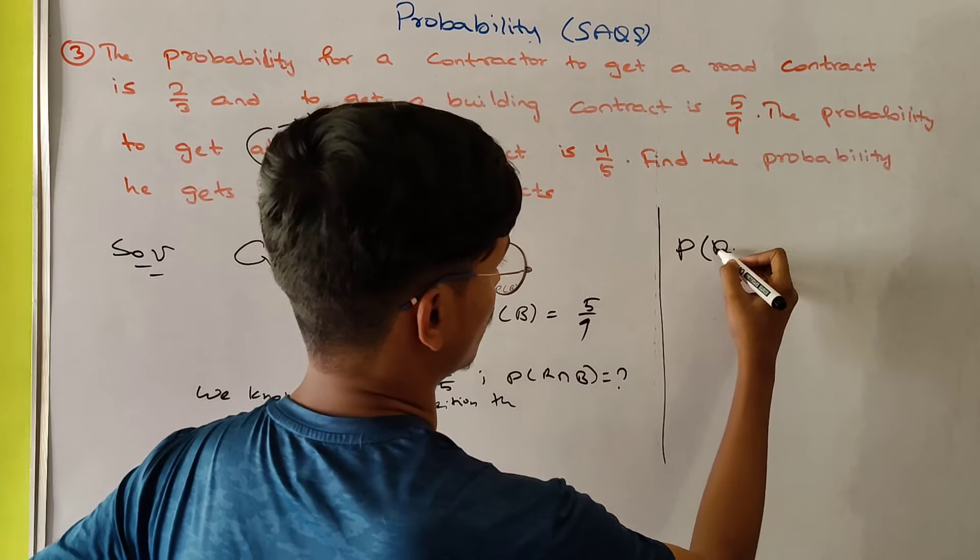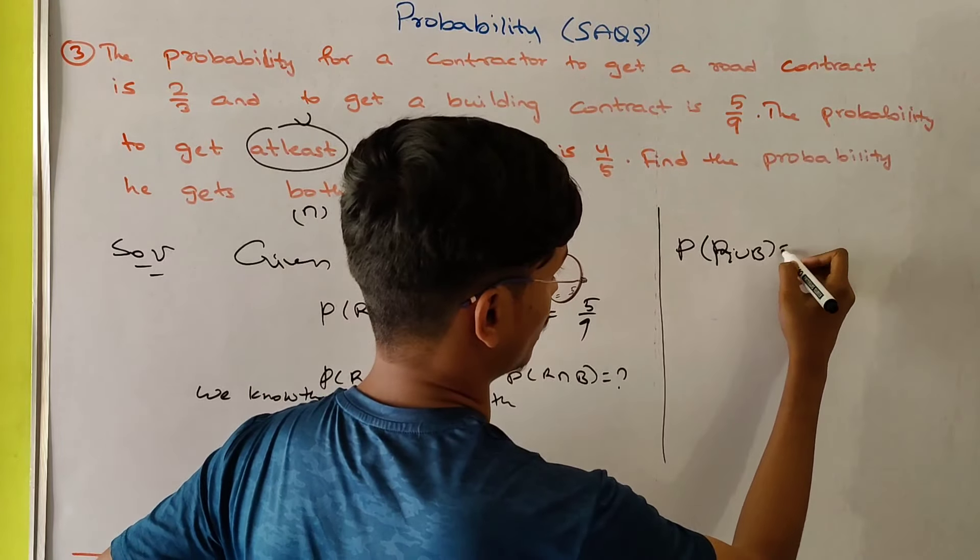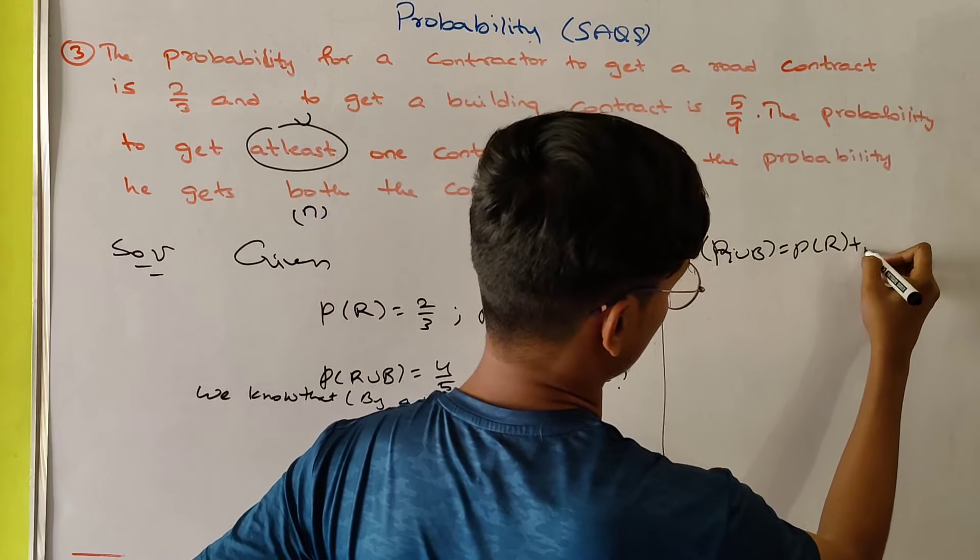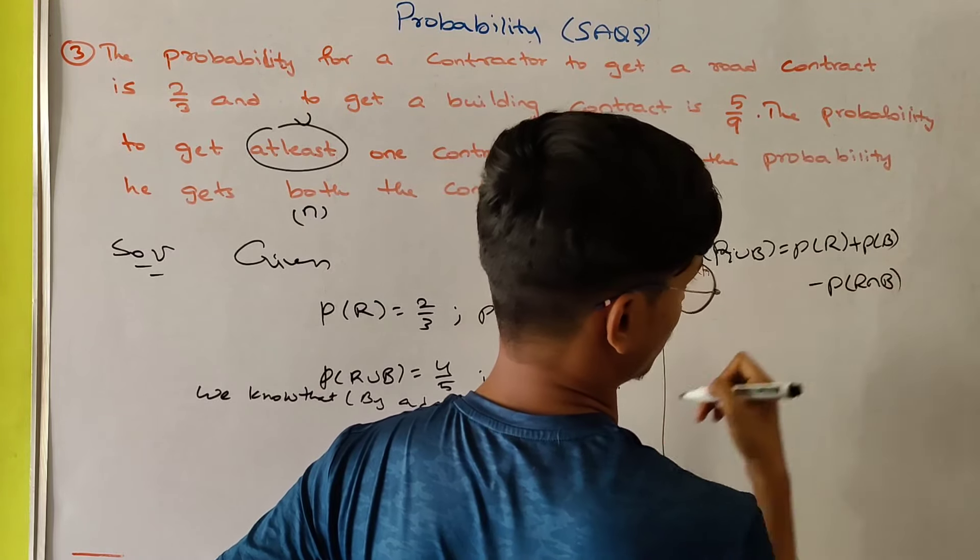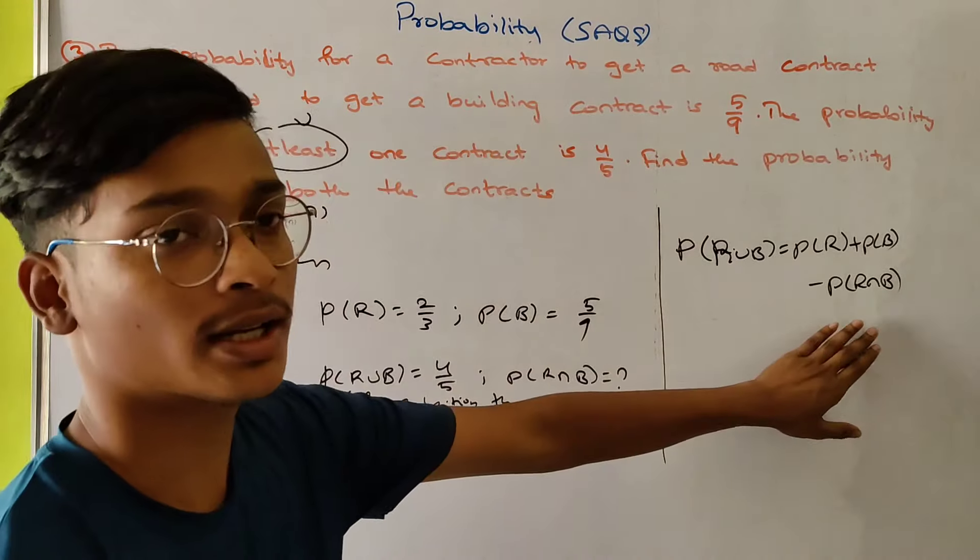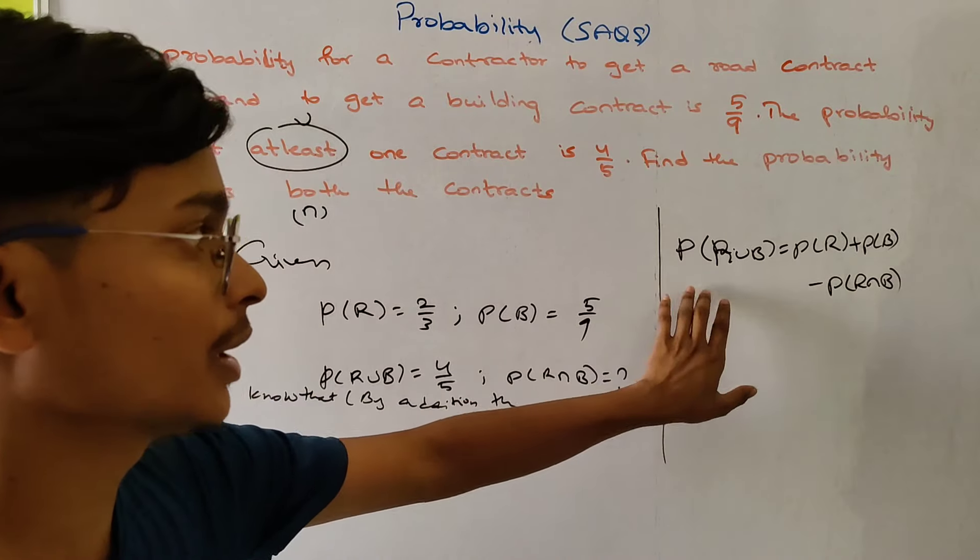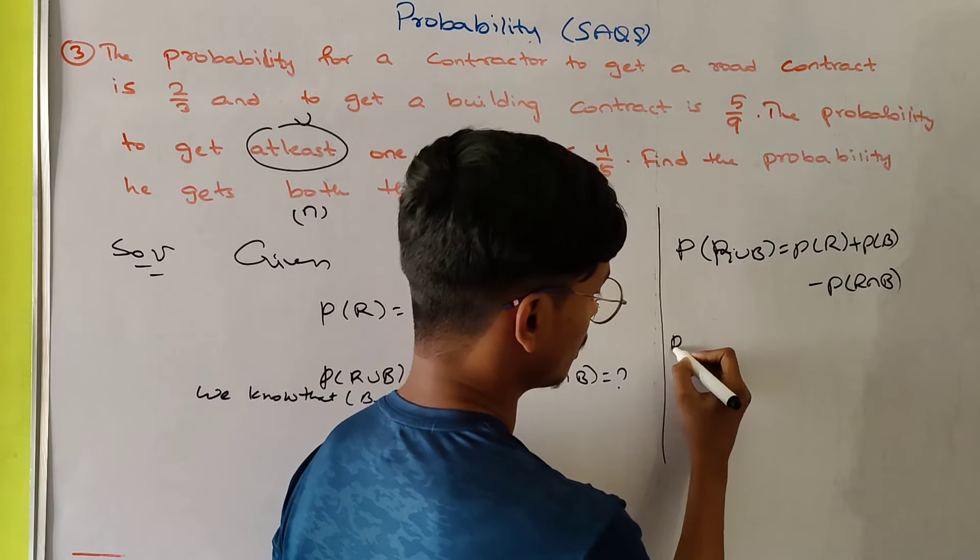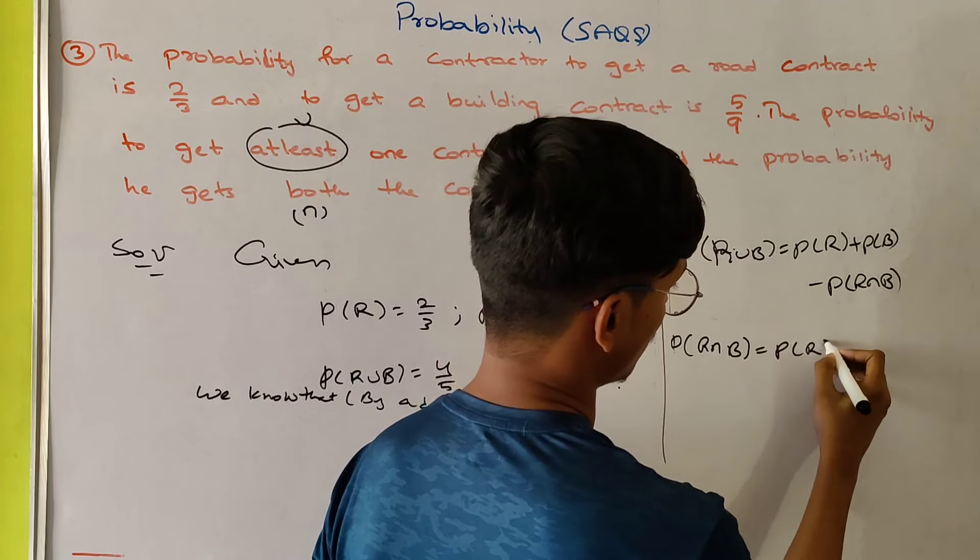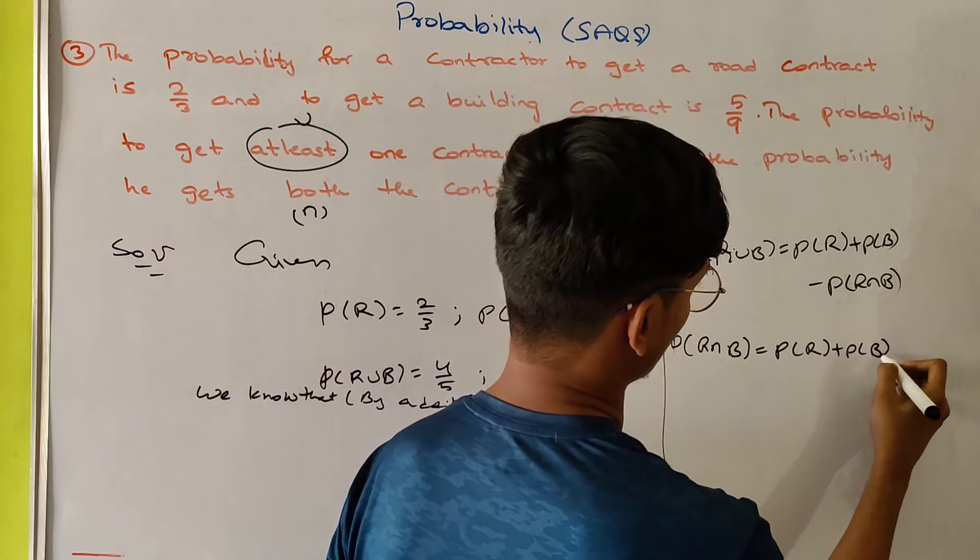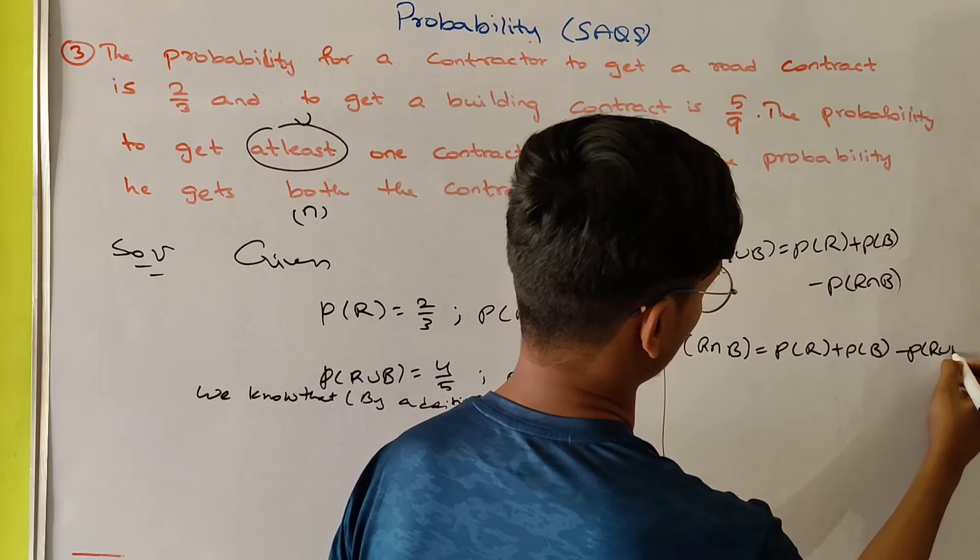P of R union B equals to P of R plus P of B minus P of R intersection B. So P of R intersection B equals to P of R plus P of B minus P of R union B.